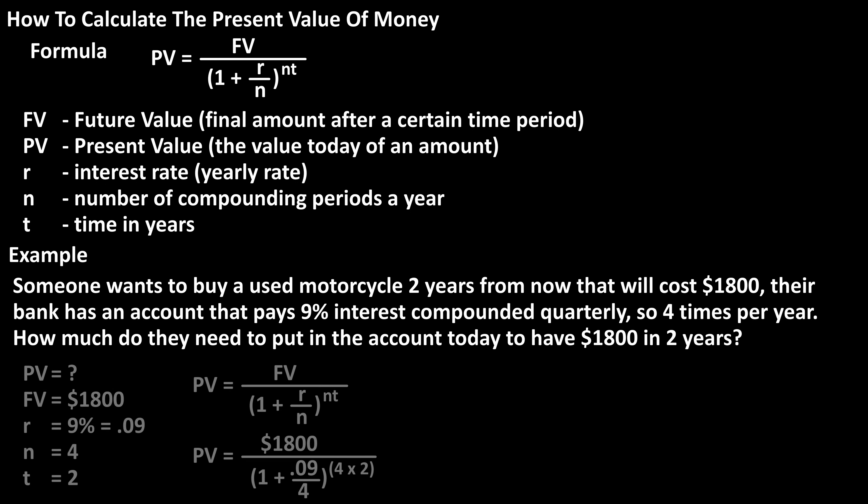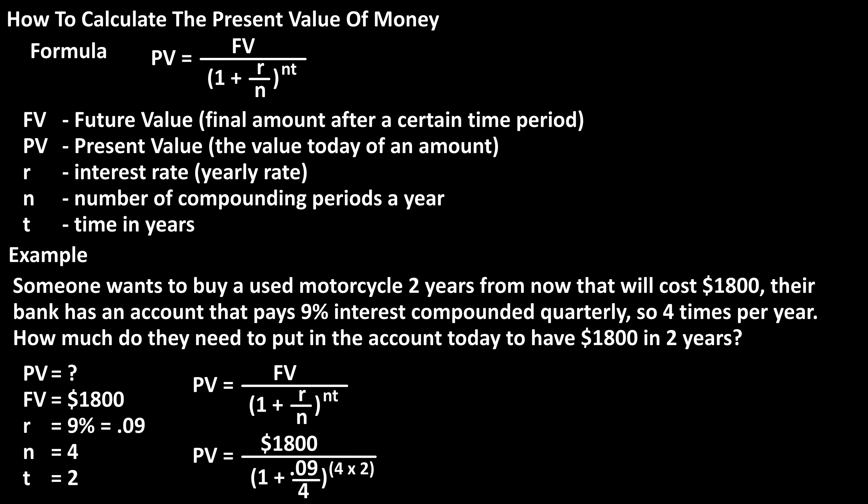Using the formula, we have present value equals $1,800 divided by the quantity 1 plus 0.09 — the decimal value of the yearly rate of 9% — divided by 4, the number of compounding periods per year.